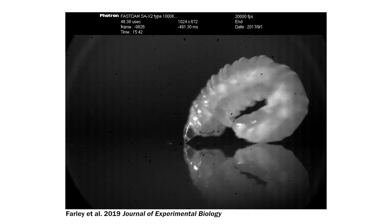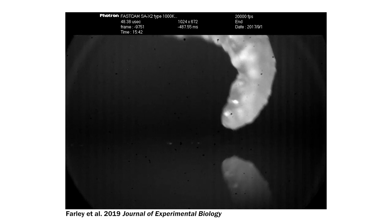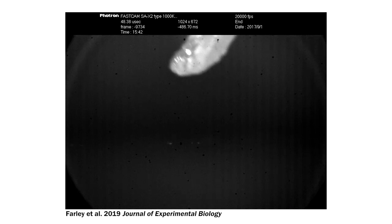The gall midges latch two microstructured segments of their underbody together, which holds them in a loop while they build up internal pressure. When these segments slip loose, that stored energy is released and it flings them up and through the air.